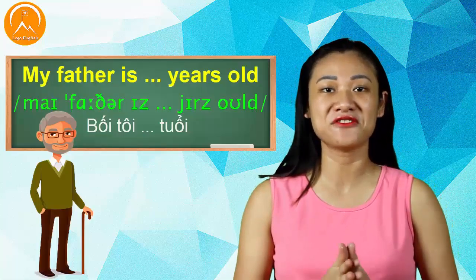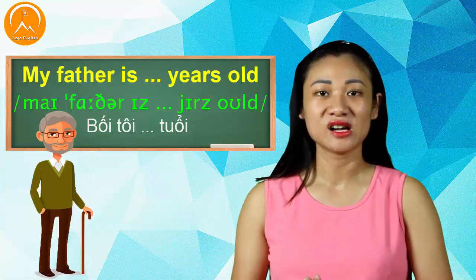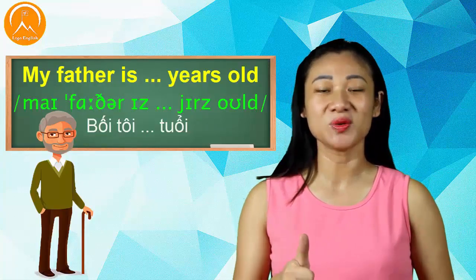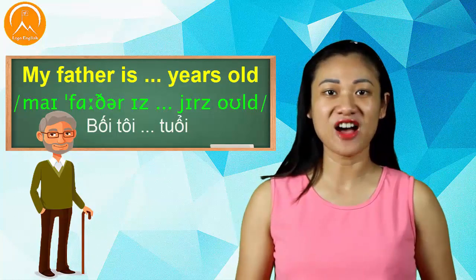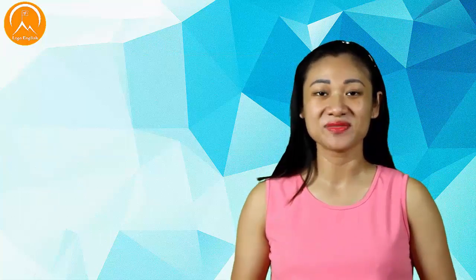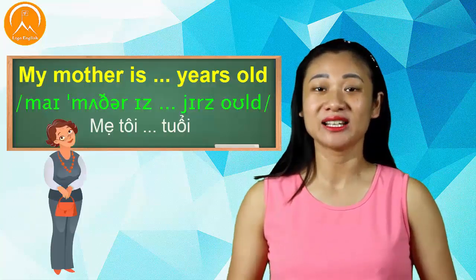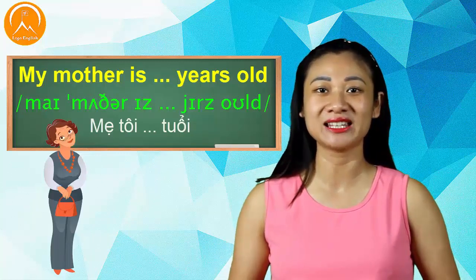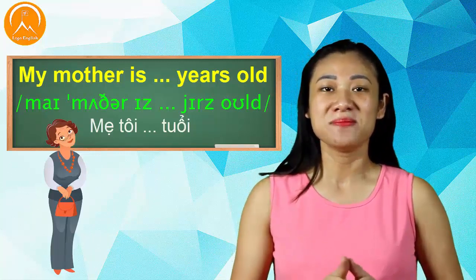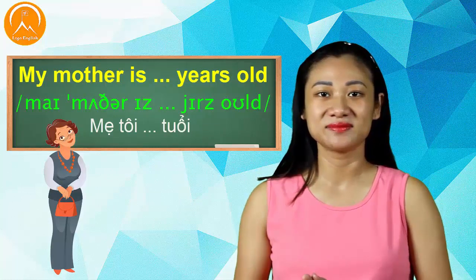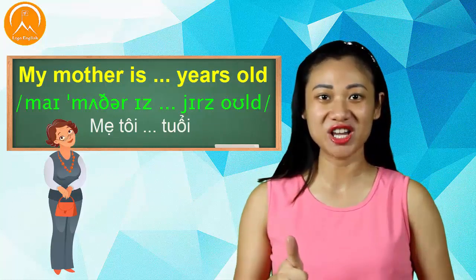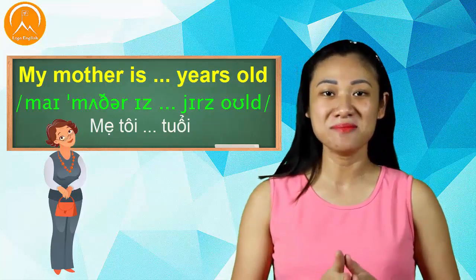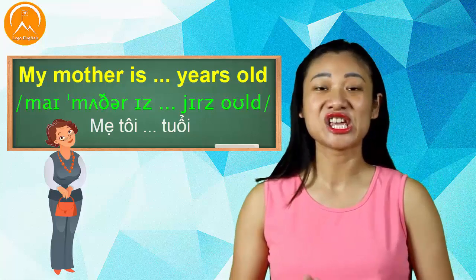Tiếp theo đến nói về tuổi của bố của mình: "My father is ___ years old". Tiếp theo đến mẹ của mình — các bạn hãy nhớ lại xem mẹ của mình bao nhiêu tuổi và tìm số phù hợp trong tiếng Anh: "My mother is ___ years old".